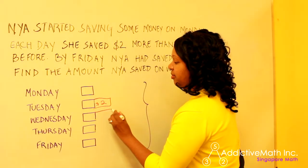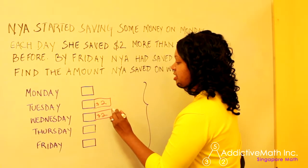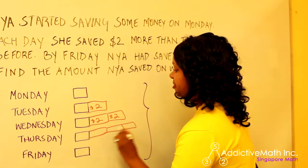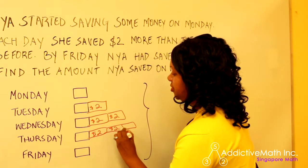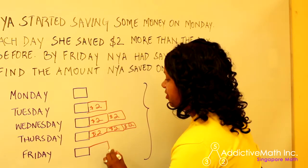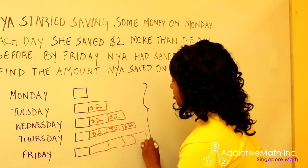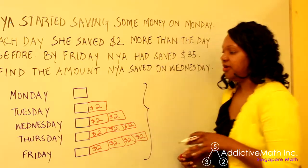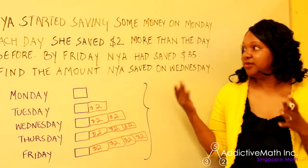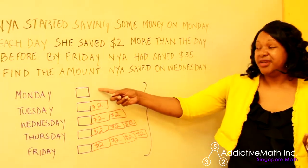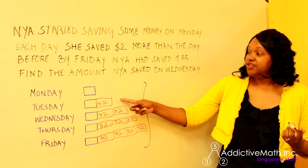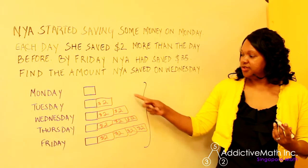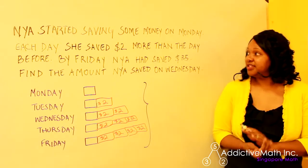So that's Tuesday. Wednesday, she saved $2 from there and another $2. Thursday, we're going to have three extra bars because she's saving $2 more than the previous day. And then Friday, we'll have four extra bars — $2, $2, $2, $2, and $2. So she started with an unknown amount on Monday, and each day she saved $2 more than the day before: $2 more than Monday, $2 more than Tuesday, $2 more than Wednesday. That's set up correctly.